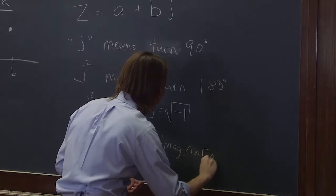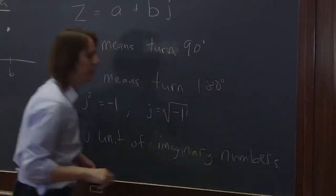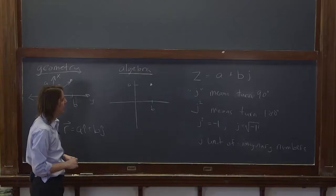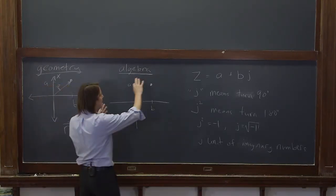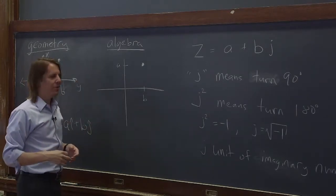If you studied imaginary numbers, you may have called it i. So here in this class, we're going to call it j. People go back and forth calling it i and j. Here we're calling it j. It's the unit of the imaginary numbers. And it gives you a way to describe this situation. And you can see it kind of matches the craziness we did a minute ago.